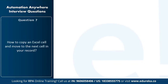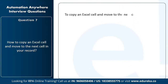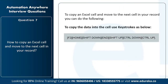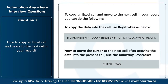Next question: how to copy an Excel cell and move to the next cell in your record? You can use keystrokes: F2, Home, Shift+Down, Shift+Up, Ctrl+Down, Ctrl+End to copy data into the cell, then use Enter + Tab to move the cursor to the next cell after copying data into the current cell.